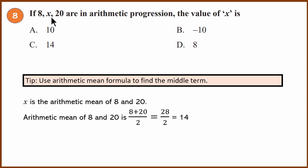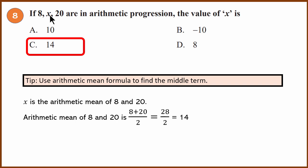Question number 8: if 8, X are in arithmetic progression, find the value of X. Use the arithmetic mean formula — add the two outer numbers and divide by 2 to get the middle term: (8 + 20) / 2 = 14. So 8, 14, 20 are in arithmetic progression with common difference 6. The answer is C.